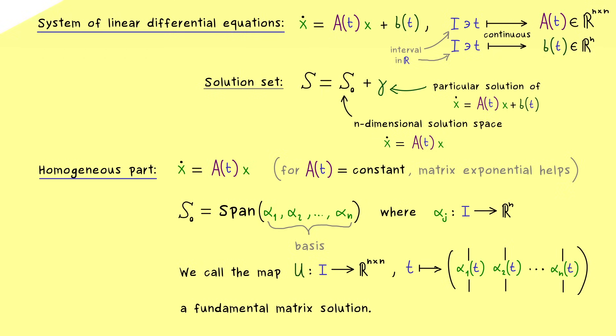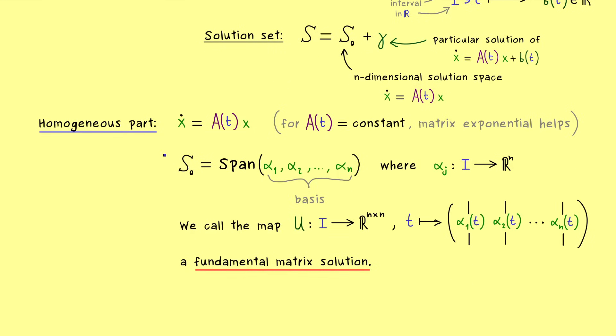It might not surprise you that this map is what we call a fundamental matrix solution. So matrix solution is quite clear because it's a matrix and every column is a solution. On the other hand, the attribute fundamental means that the columns already span the whole solution space.